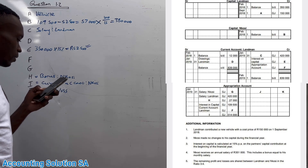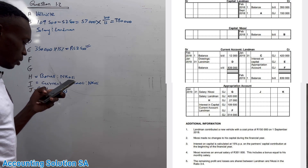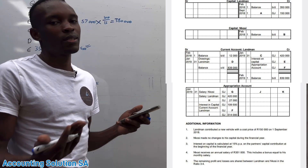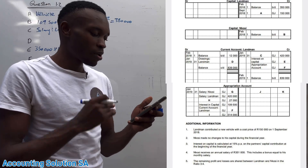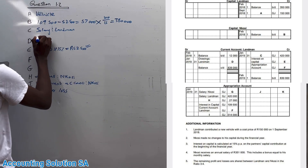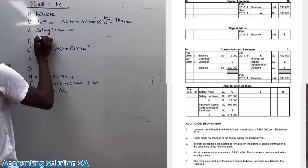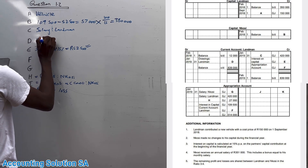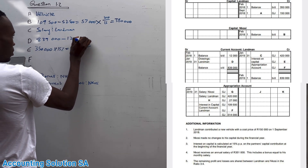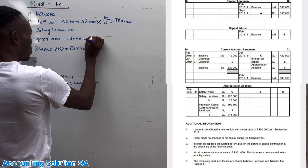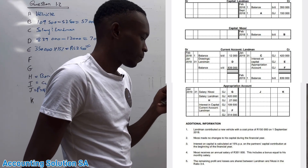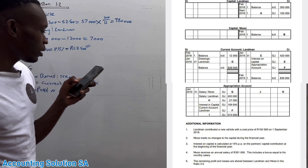Now we are left with Number D. Number D is drawings. We can just do a balancing figure because we have a total and we know the balance was 12,000, which means we need to do a balancing figure since there are no other transactions on the debit side. So it's 18,900 minus 12,000, which gives us 7,000 for drawings - simple.